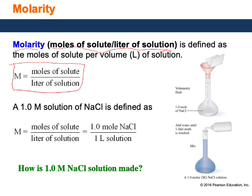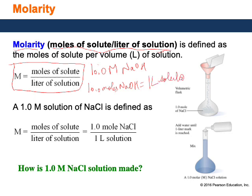If the concentration is given to you in the question, use it as a conversion factor. For example, if you have a 10.0 molar NaOH solution: 10 molar (capital M) means you have 10.0 moles of NaOH in 1 liter of solution. So the conversion factor is: 10.0 moles of NaOH = 1 liter of solution.